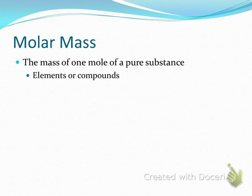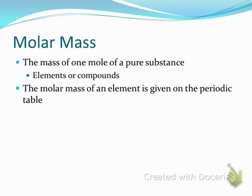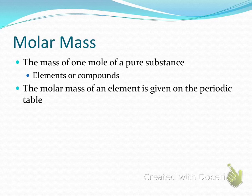The difference is that atomic mass looks at one single atom, while molar mass looks at a whole mole of atoms. Molar mass is given on the periodic table just like atomic mass is. So if I ask for the molar mass of carbon, you're still going to tell me 12.01 — except the units are different.